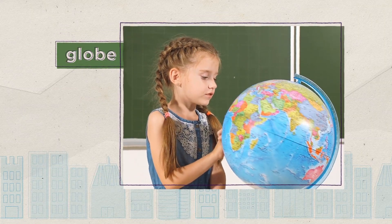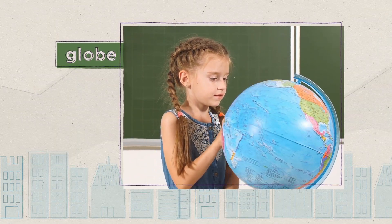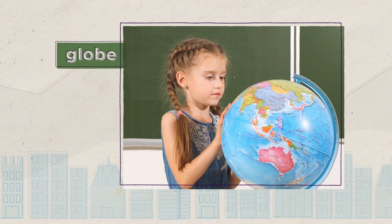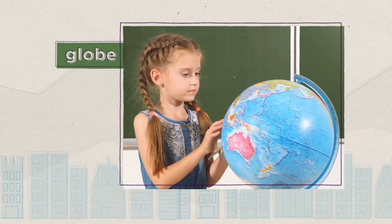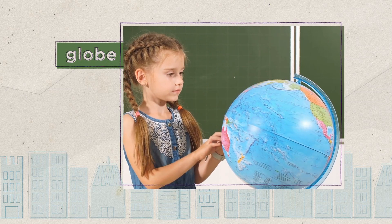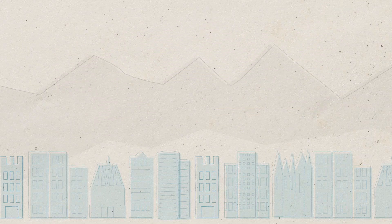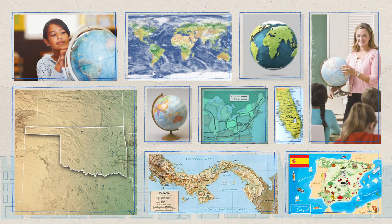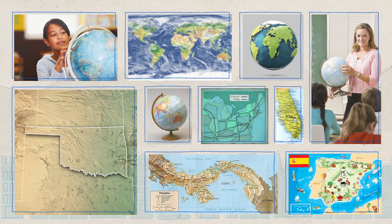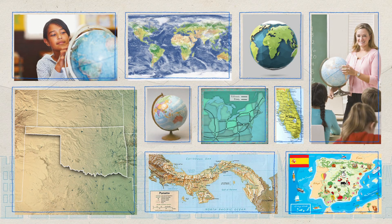A globe is a three-dimensional model of Earth. Three-dimensional means that, instead of being flat, the model is round like a ball. Many globes and maps show the land and water features of places on Earth. Can you tell which is land and which is water?